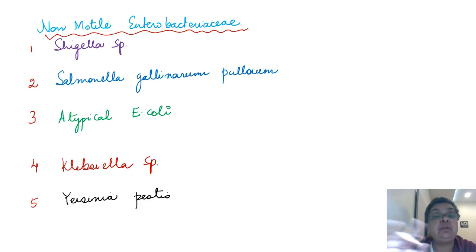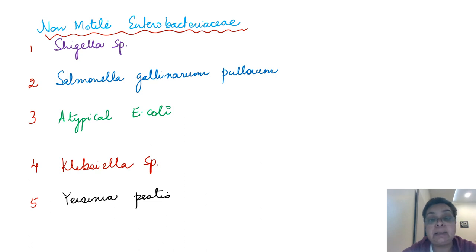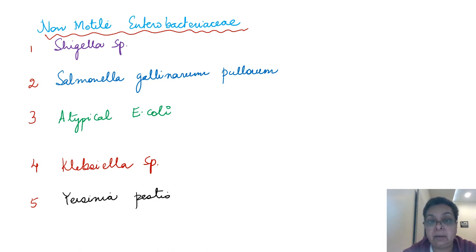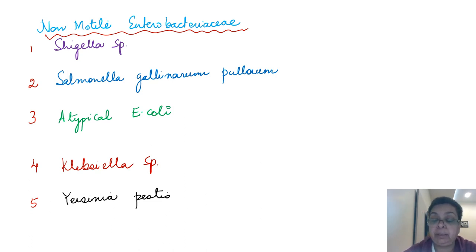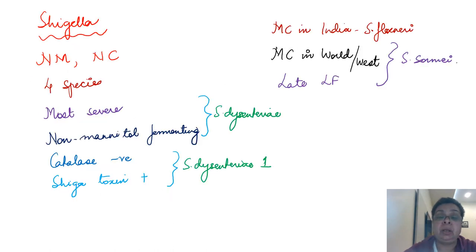Since our answer is non-motile Shigella, let's note that Shigella belongs to the family Enterobacteriaceae. The five non-motile members of Enterobacteriaceae are: Shigella, Salmonella gallinarum-pullorum, atypical Escherichia coli, Klebsiella, and Yersinia pestis. These are all non-motile; the rest of Enterobacteriaceae are motile by peritrichous flagella. Let's quickly go through some important things about Shigella, which is the cause of bacillary dysentery.